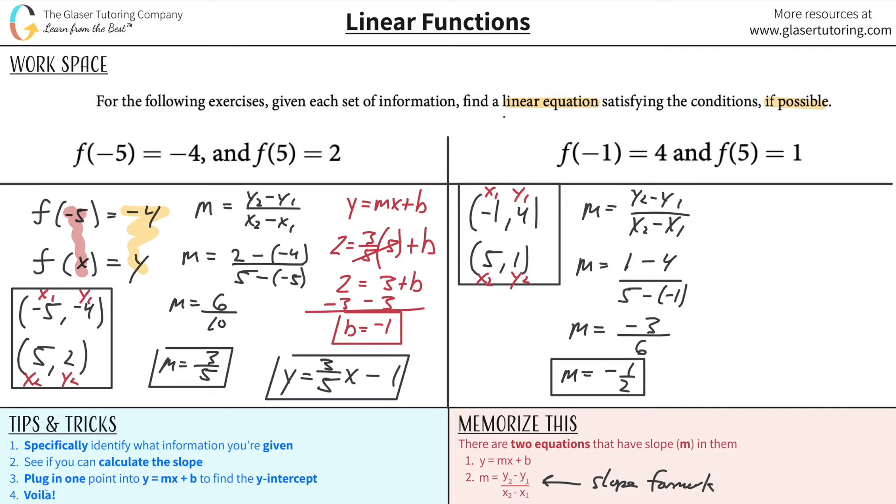So 1 minus 4 is going to be negative 3, and the double negative here on the bottom with the 1 is really a plus. So it's 5 plus 1, which is 6. Simplifying this on down now, we realize that we're going to get negative 1 half. And you can leave it that way, or you can plug it in as the decimal point, negative 0.5.